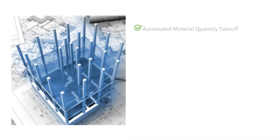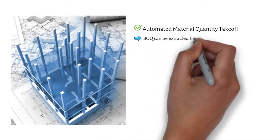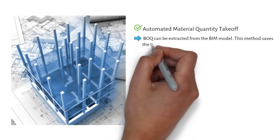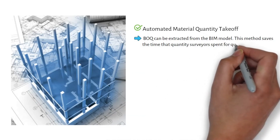Automated Material Quantity Takeoff: In traditional methods, all quantities are extracted from 2D drawings, which is a time-consuming process. Since the BIM model encompasses properties of the elements, the Bill of Quantities (BOQ) can be extracted directly from the BIM model. This method saves the time that quantity surveyors spend on quantity takeoff.